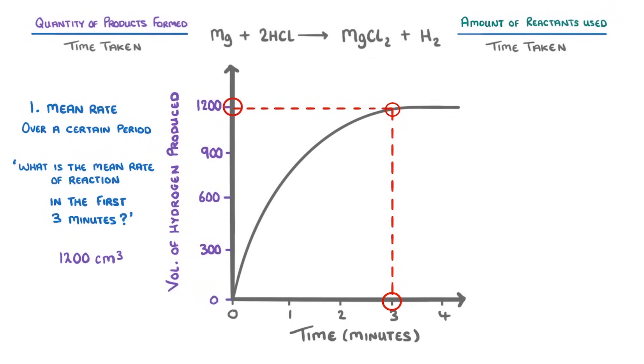So we just do 1200 cm³ divided by 3 minutes, or 180 seconds, to get an average rate of 6.67 cm³ per second.